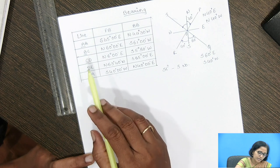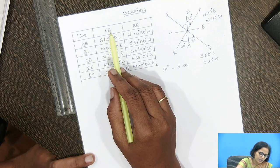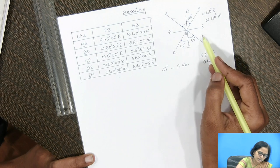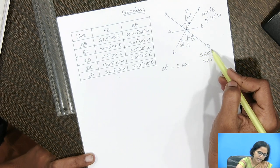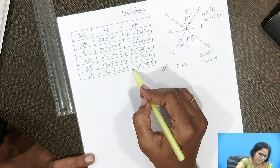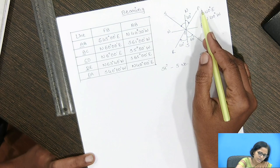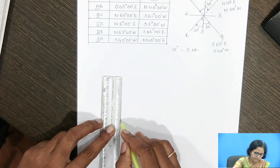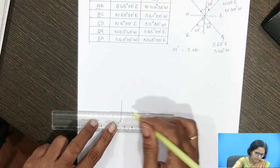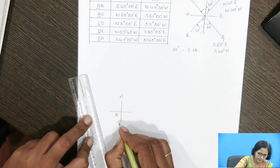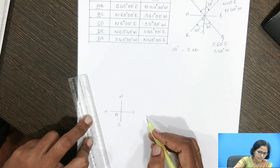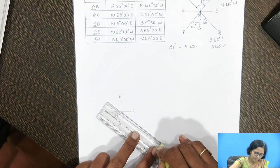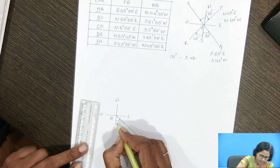Let us see where to take station A. The forebearing of station A is given as south 45 degrees towards east — that is south-east — so it will be below somewhere. We fix point A and draw the line making an angle of 45 degrees towards the south-east.